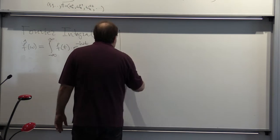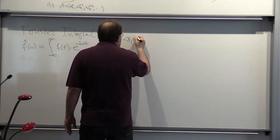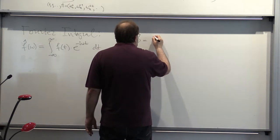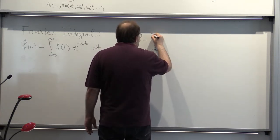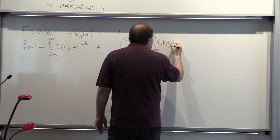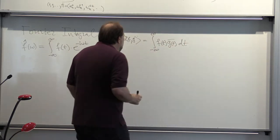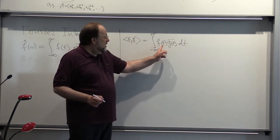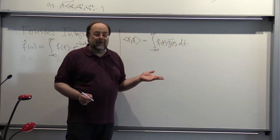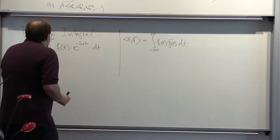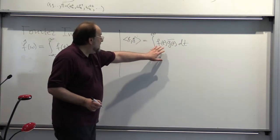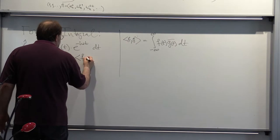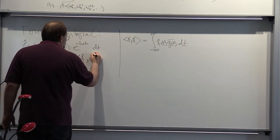What is the scalar product here? The scalar product of f of t and g, for non-periodic functions, is defined as the integral from minus infinity to infinity of f of t times g of t conjugate dt. So this scalar product is the point-wise product of functions, averaged over time. And then f-hat of ω is simply the scalar product of f and e to the iωt.